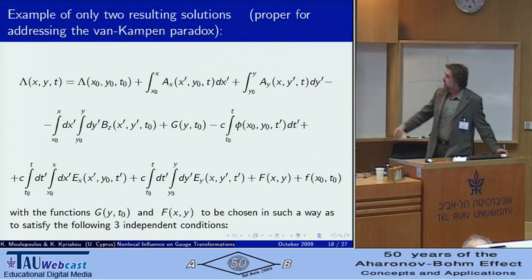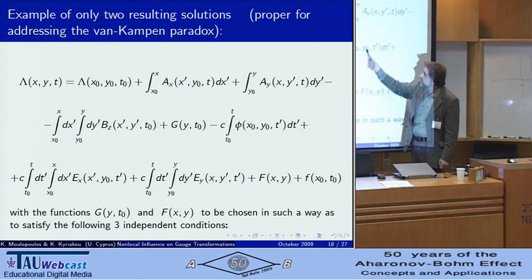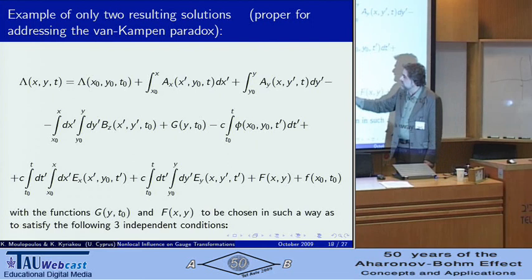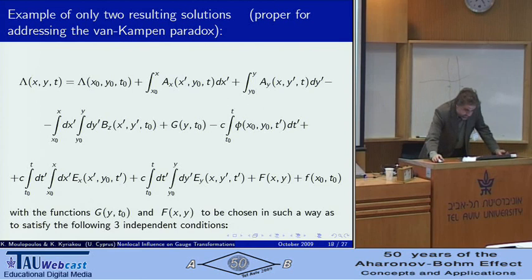The result involves, contains the usual line integrals of the vector potential, a temporal time integral of scalar potential at the initial point, and also involve some non-local terms that show electric fields and magnetic field at different regions of space-time, plus some other quantities that I can talk about if you're interested.